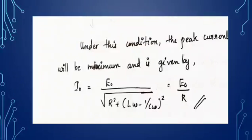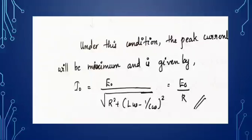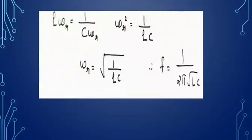Under this condition, the peak current is maximum, given by I₀ = E₀/R, since √[R² + (ωL − 1/ωC)²] reduces to R when ωL = 1/ωC. When ωL = 1/ωC, the EMF and current are in phase and current is maximum. In this case, the circuit is called a series resonant circuit, and the phenomenon of maximum current is called resonance.